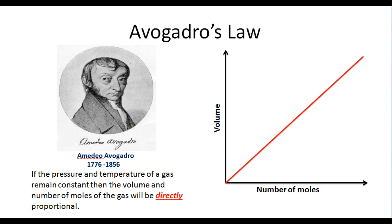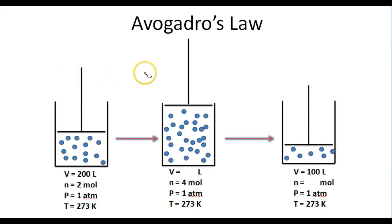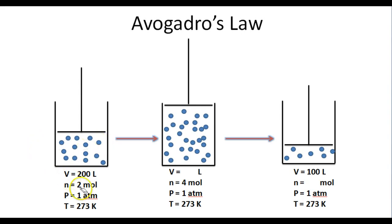Let's take a look at an example with three cylinders, each containing a gas. The pressure and temperature of each gas are held constant — the pressure is one atmosphere and the temperature is 273 K. In the first container, we've got two moles of gas at a volume of 200 liters, so this gas is occupying 200 liters of space.